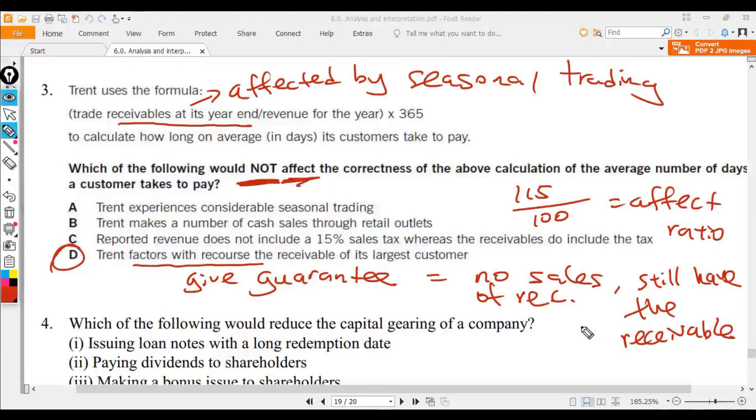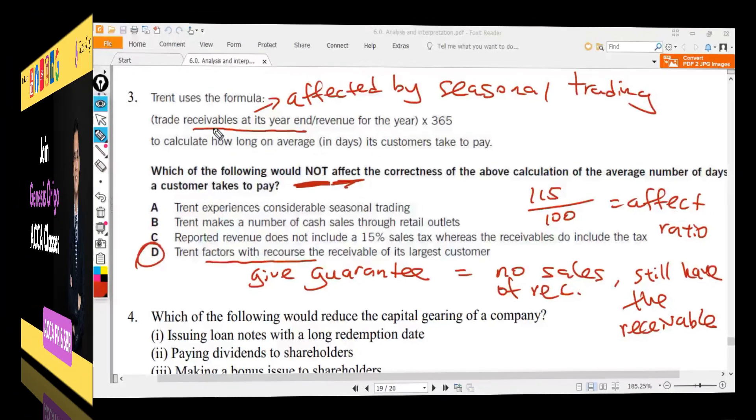D will not affect the correctness. You factor the receivable with recourse that means you still keep the receivable, and there's nothing wrong for you to include it inside your calculation.